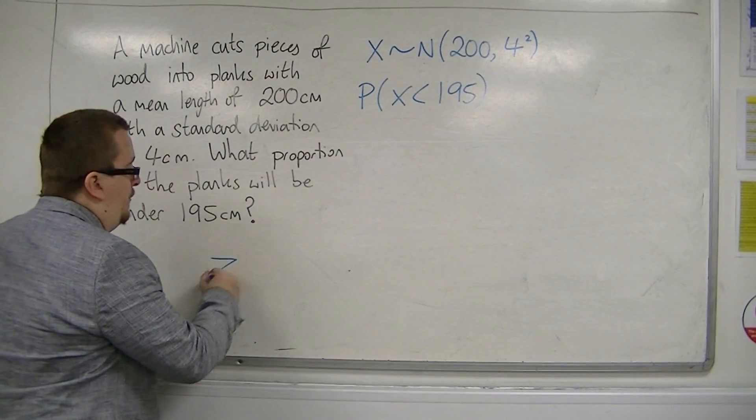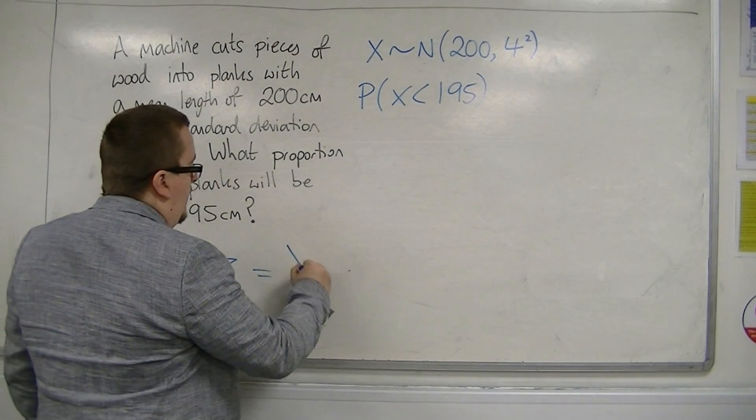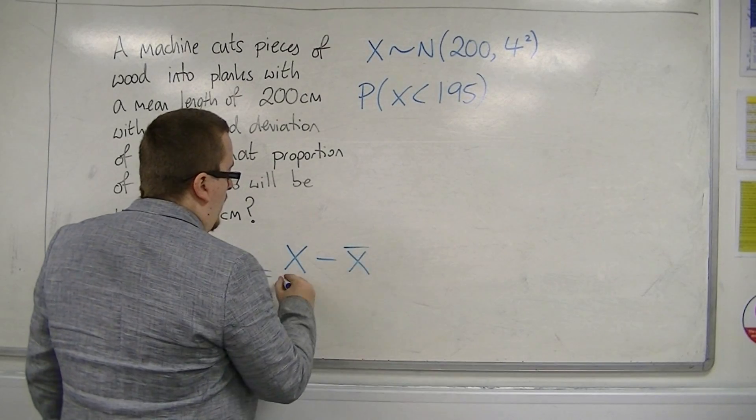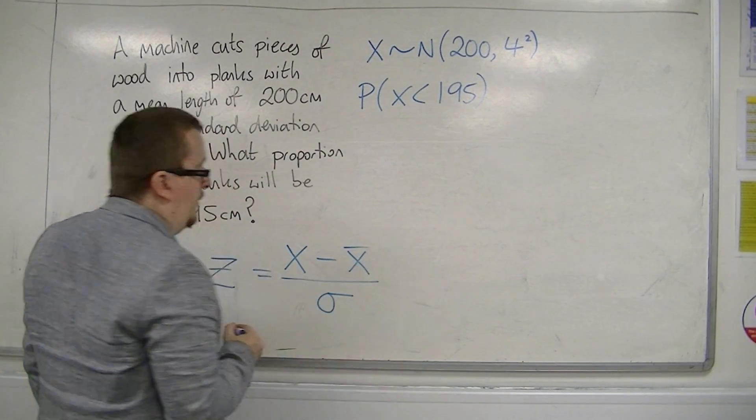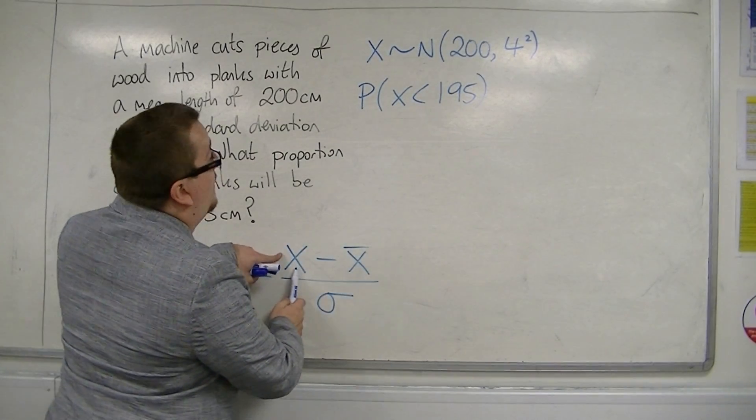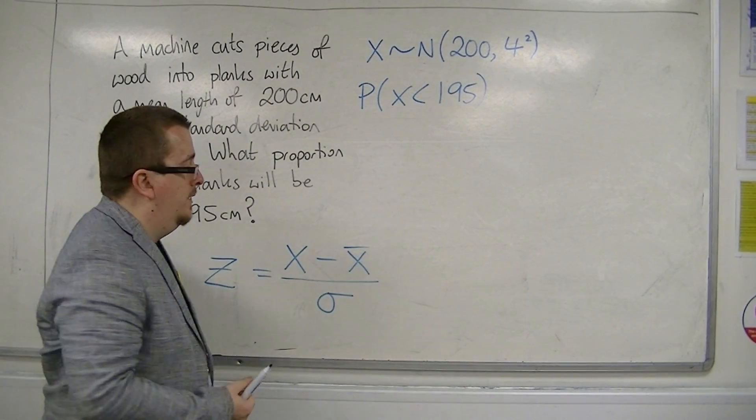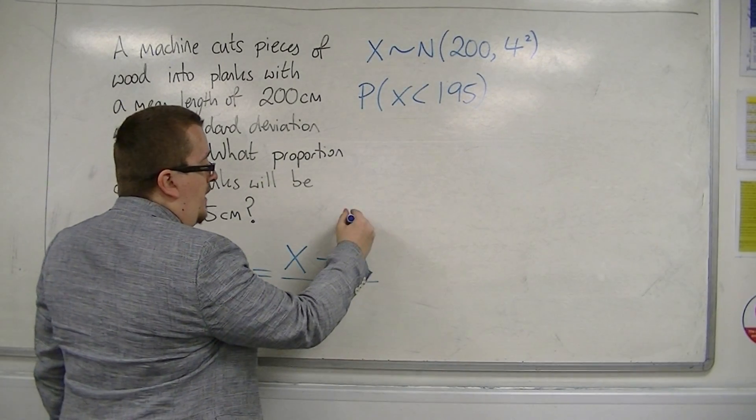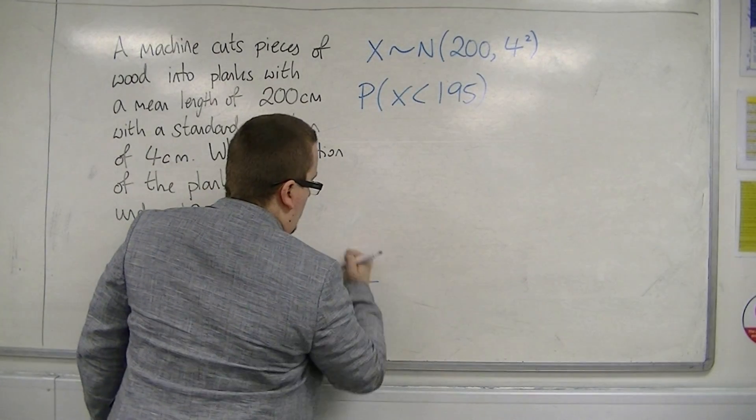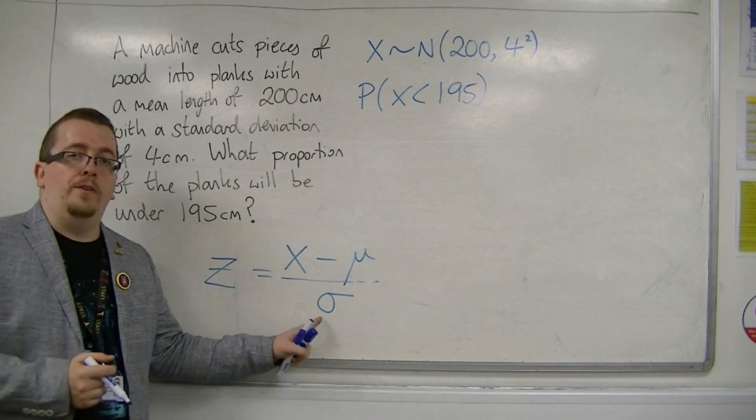To determine the value of Z, we use the formula X minus X bar over the standard deviation. Now, X is the value that we're working with here, and X bar is the mean. So I can quite as easily just use the letter mu here. So, X minus mu over sigma.